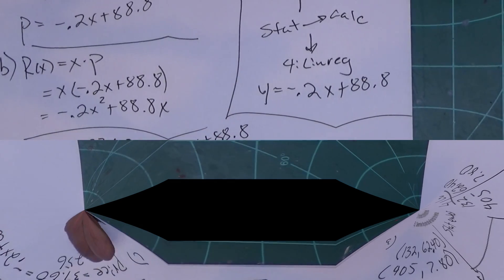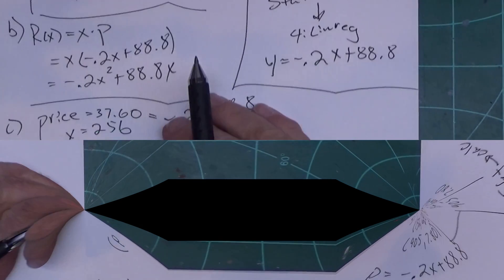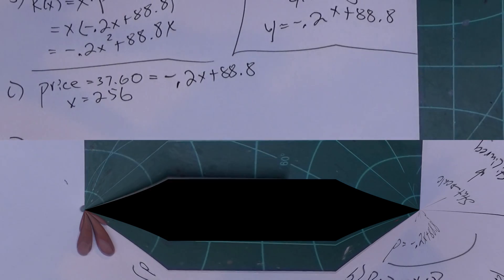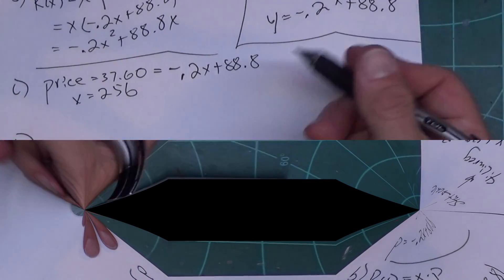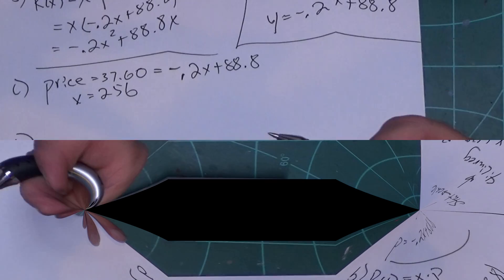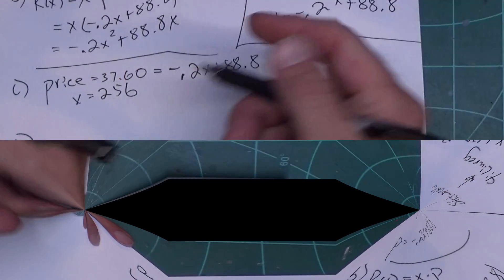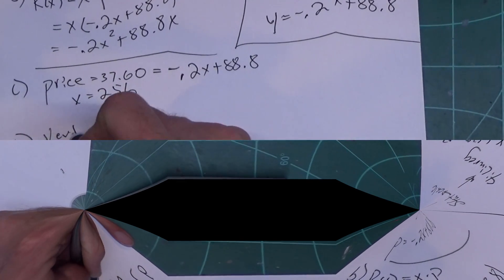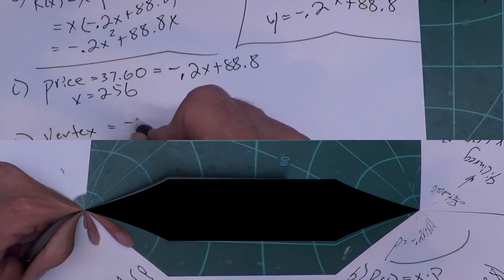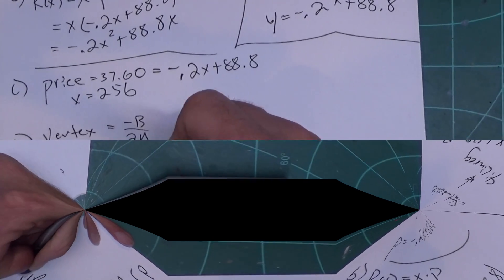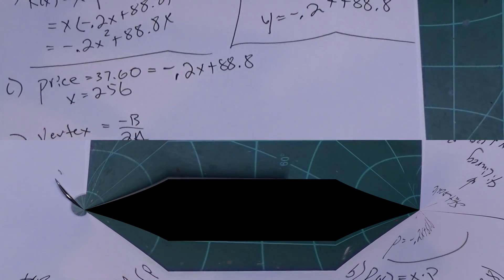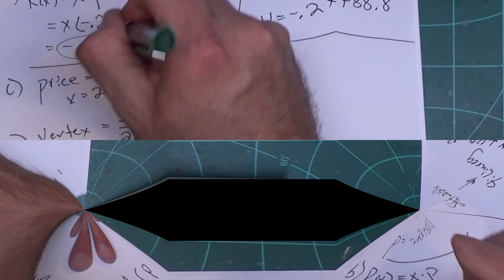Since there's only one solution, the calculator will find it. If it was a quadratic, I'd have to guess around a little bit. So in part C, I get x equals 256. Part D, the number of units to maximize revenue. Well, that's not too hard. We're not in calculus, but it's a quadratic and the vertex is at negative B over 2A.